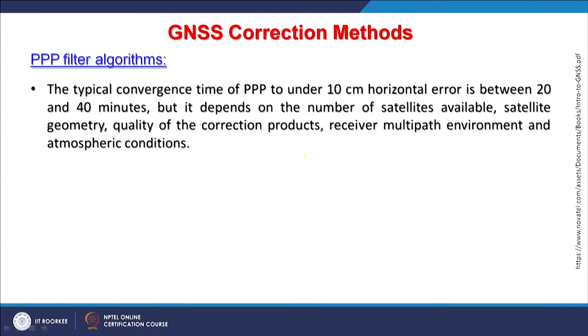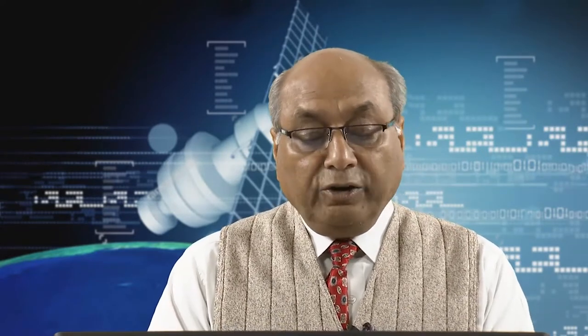The typical convergence time of PPP to under 10 centimeter horizontal error is between 20 to 40 minutes, but it depends on the number of satellites available. If fewer satellites are available from multiple GNSS systems, it will affect the accuracy. Other factors include how satellites are distributed in space, the GDOP — Geometric Dilution of Precision — quality of correction products, the receiver multipath environment, whether signals are received directly from GNSS satellites or through reflection from a mountain or building, and the atmospheric conditions.